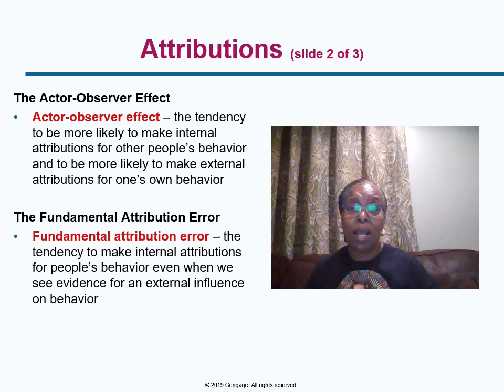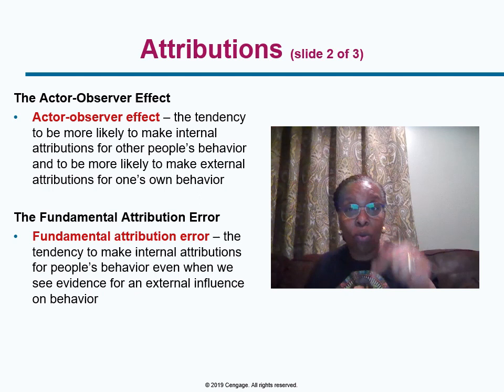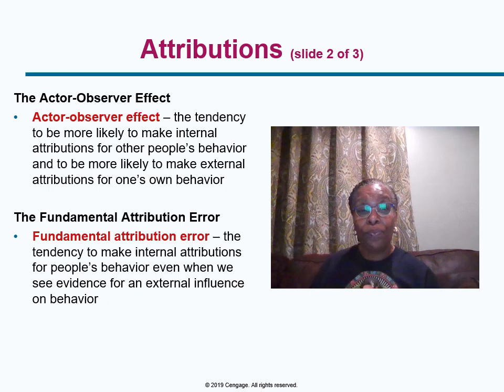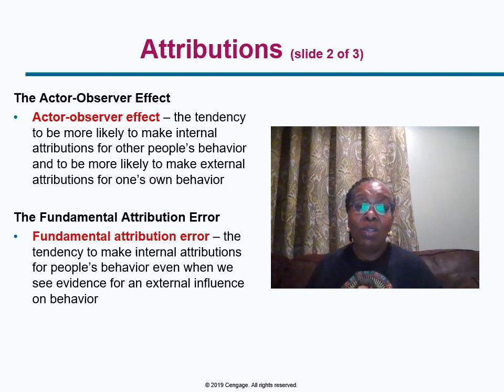The actor-observer effect means we're more likely to attribute internal causes to other people's behavior than to our own. You are an actor when explaining causes of your own behavior and an observer when explaining someone else's. People generally attribute others' behavior to internal causes even when they see evidence of external influences — this tendency is known as the fundamental attribution error, also called correspondence bias, meaning a tendency to assume strong similarities between someone's current actions and their dispositions.